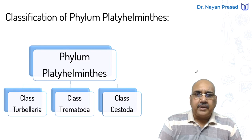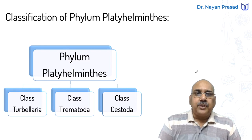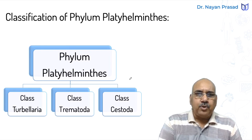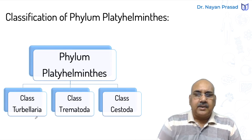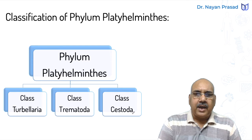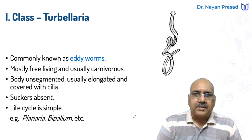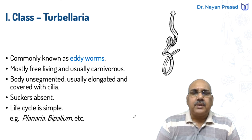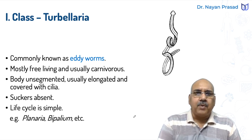This group includes flatworms and they are divided into three different classes. The three main groups of phylum Platyhelminthes are Turbellaria, Trematoda, and Cestoda. We have to discuss the general characters of these groups in detail one by one.